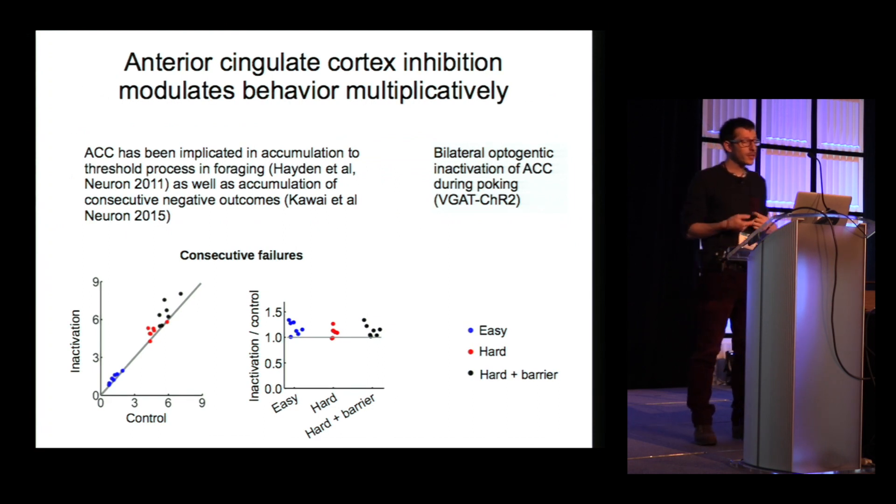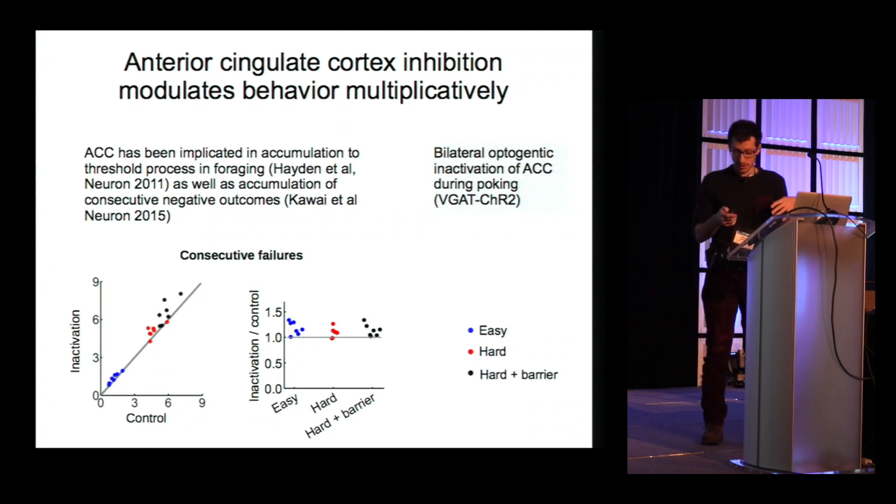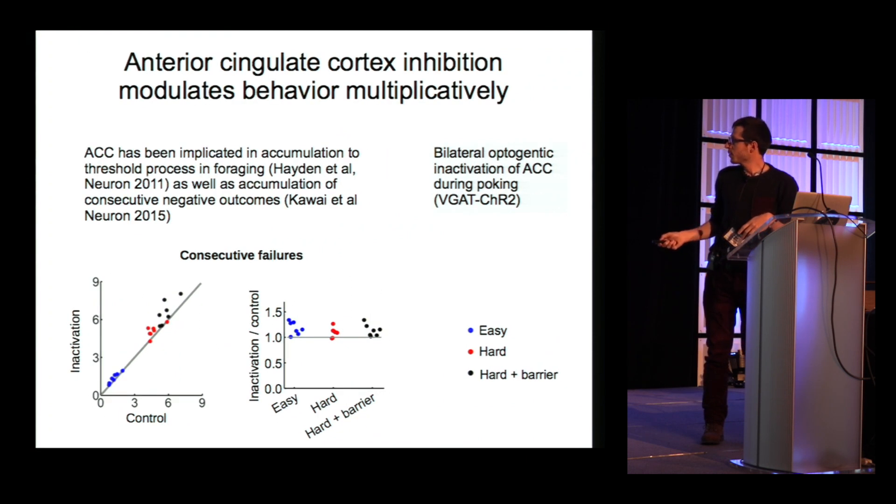Having established that interesting computations are going on in the task, we tried to understand where they could be implemented. And we first looked at the anterior cingulate cortex, which has been implicated already in accumulation to threshold processes in foraging, as well as accumulation of consecutive negative outcomes. And we inactivated the anterior cingulate cortex during poking, and what we saw is an increase in the inactivated trials in consecutive failures before leaving, especially in the hardest protocol. And the effect is multiplicative, as you can see here, by looking at the ratio, which is constant across protocols.